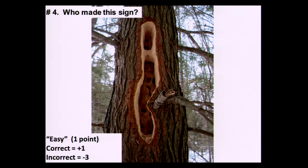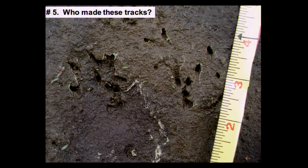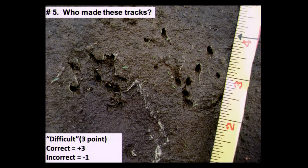That's the pileated woodpecker sign — a big hole in the side of the tree. Plus one, it's an easy question at least where I'm from. Negative three if incorrect. This is frog tracks — the rear foot, the front foot, the other front foot, the other rear foot, all four feet on the ground. Difficult question: plus three if correct, negative one if incorrect. This is muskrat tracks — hind foot, front foot, five toes on the rear, four toes on the front. Small track, about an inch long. Moderate difficulty: plus two correct, minus two incorrect.